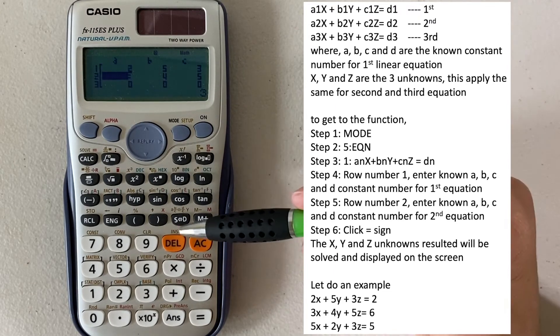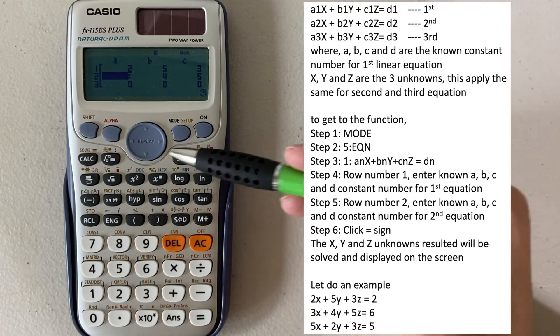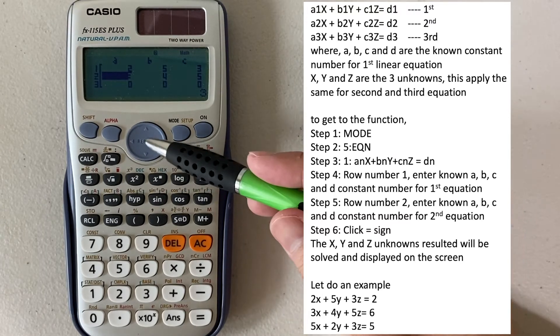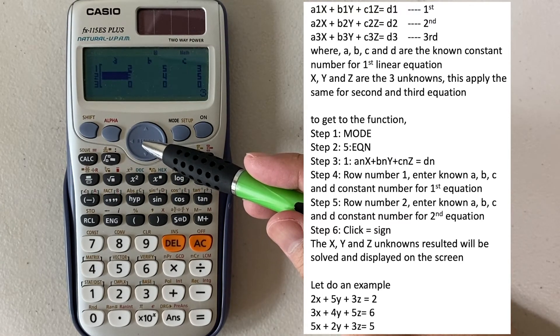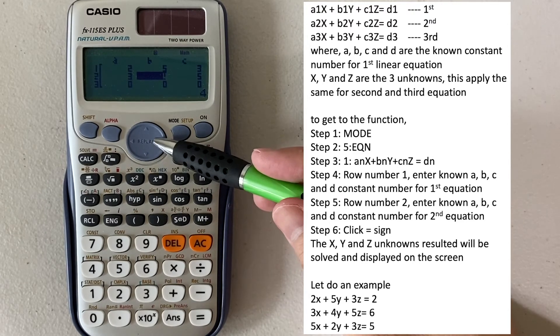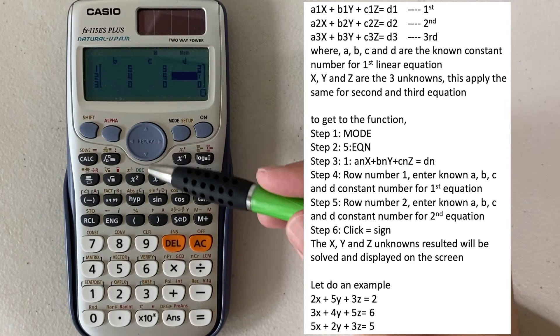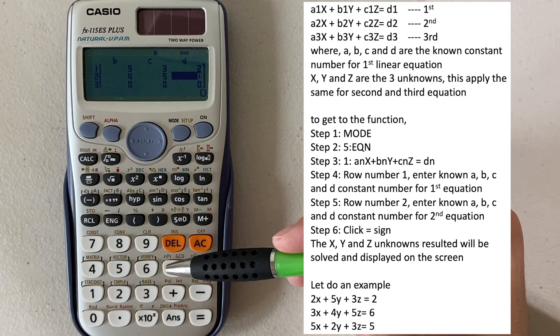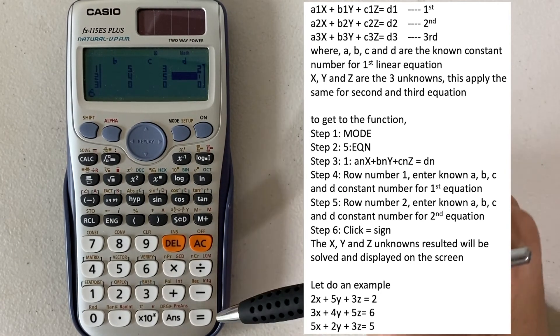So go back to row number two, and then just use the cursor to move left or right. For the second equation, A is 3, and then 4 for B, and C is 5, and 6 is D. Okay, continue on.